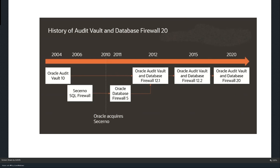Audit Vault has been around for quite some time — more than 15 years. It started off as Audit Vault 10, and was actually acquired by Oracle from another company called Sekerno. It was called Sekerno SQL Firewall, and Oracle acquired Sekerno and has been developing the product since. We had versions 12.1, 12.2, and now version 20. Almost every few months we see a new release of version 20, so the most recent version is 20.5 — and maybe by the time we finish the session, it's already 20.6. This product is being updated quite rapidly.